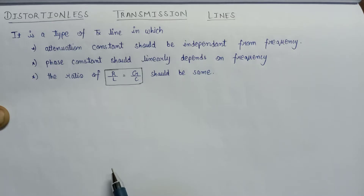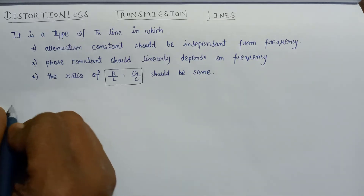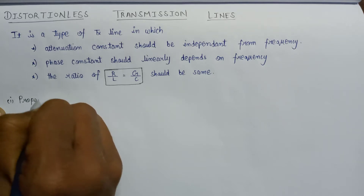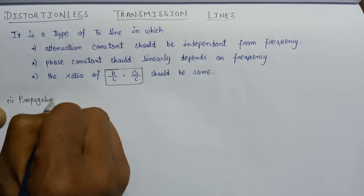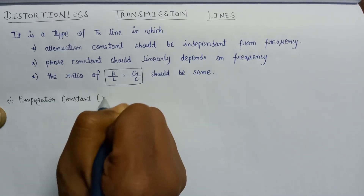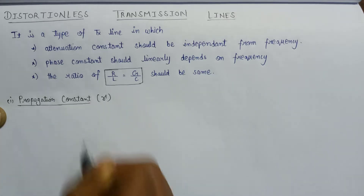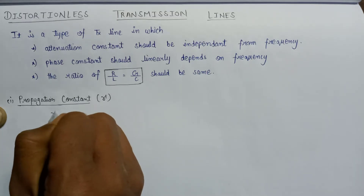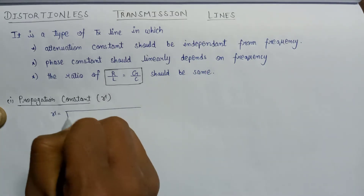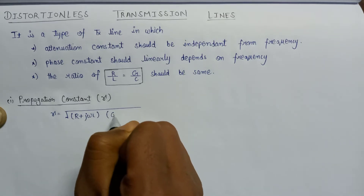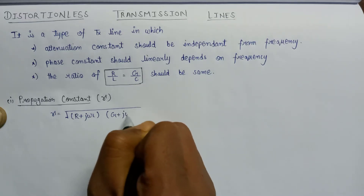Let us discuss the parameters associated with distortionless transmission line. The first parameter is propagation constant gamma. We know that the value of gamma equals the square root of (R + jωL)(G + jωC).